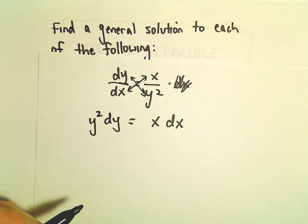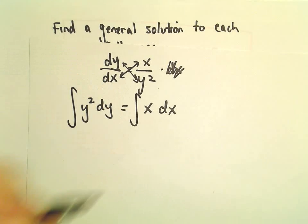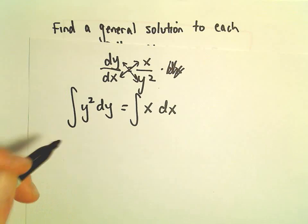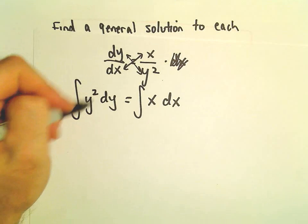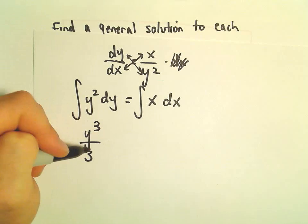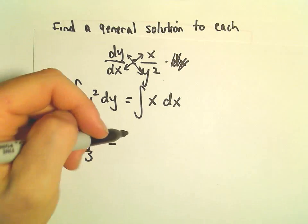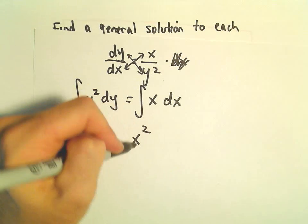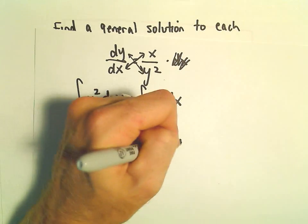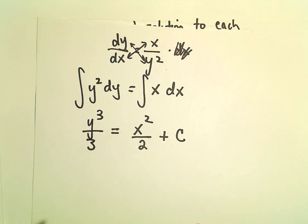Now we've separated. The next thing I'm going to do is integrate. If we start with two things that are equal, we can integrate both sides. The antiderivative of y squared will be y cubed over 3. The antiderivative of the right side will be x squared over 2. I'm just going to stick the plus c on the right side — you don't have to put constants on both sides.